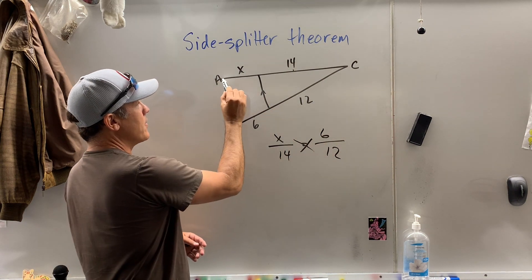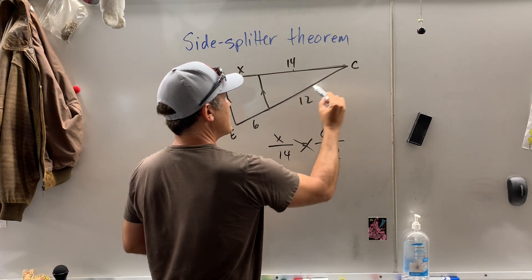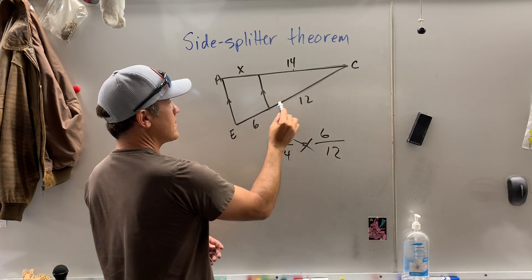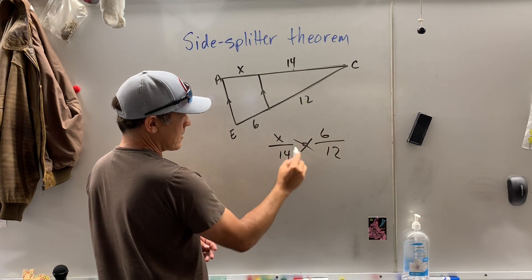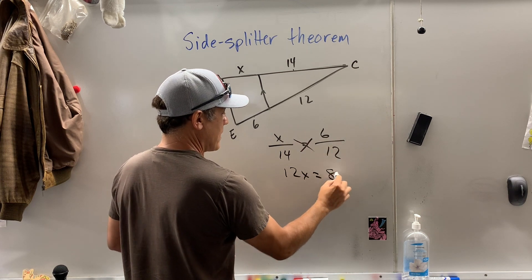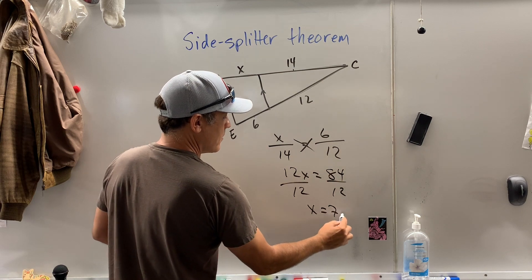What do we do? This side is to this side as this side is to this side. So x is to 14 as 6 is to 12. x times 12 is 12x, 14 times 6 is 84, divide by 12, x equals 7.